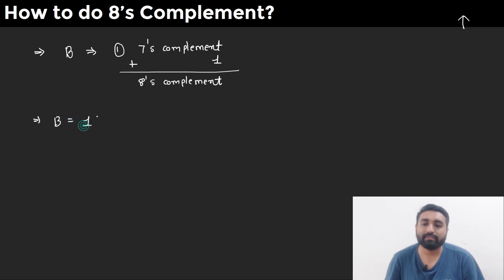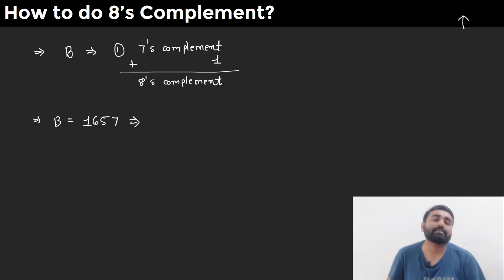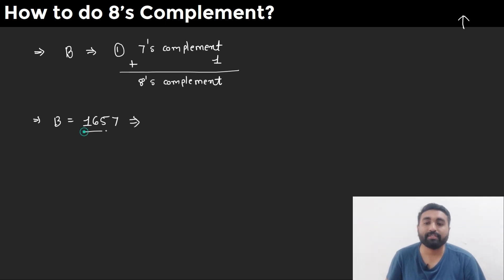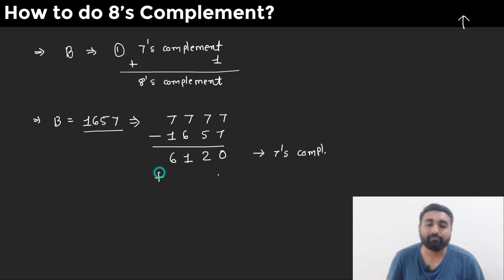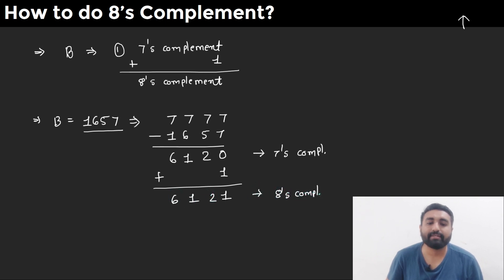Let me explain with an example. Say number B = 1657. To find the 7's complement, we subtract from 7777: 7 minus 7 = 0, 7 minus 5 = 2, 7 minus 6 = 1, 7 minus 1 = 6. So the 7's complement is 6120. Adding 1 gives us 6121 — that is the 8's complement of 1657.